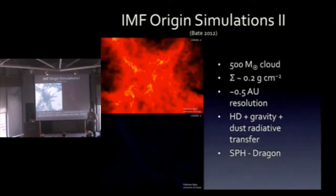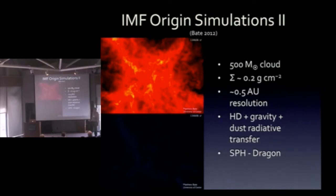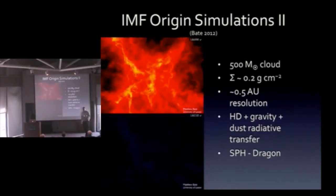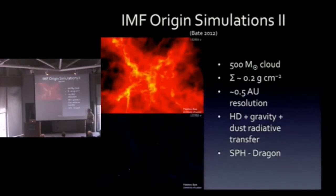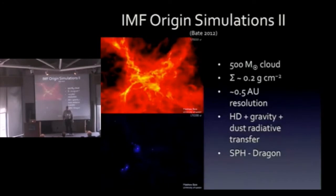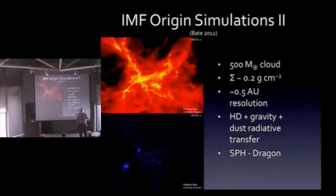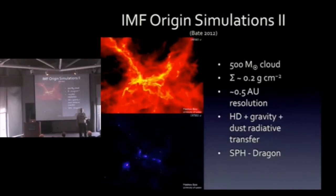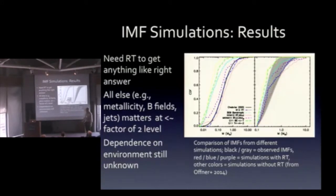Here's another example done by Matthew Bate using SPH — a somewhat lower surface density region going to significantly higher resolution, but not including stellar radiation feedback, only radiative transfer from compressing gas. You see the gas fragment and heat up, and that heating turns out to be the key to the answer. Here's a comparison from Stella Offner's recent review: black and gray are observations, red, blue, and purple are simulations with radiative transfer included, and they cluster around the observations.